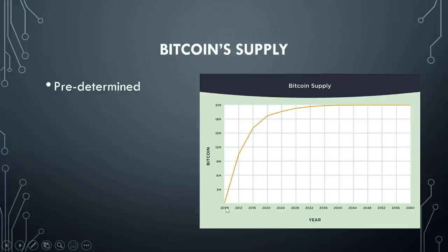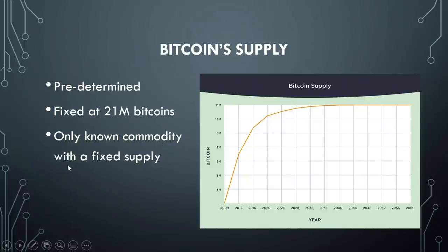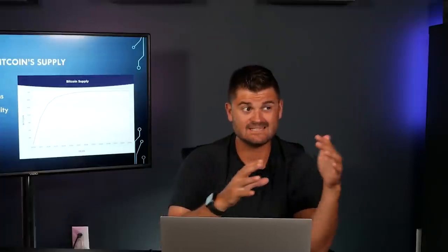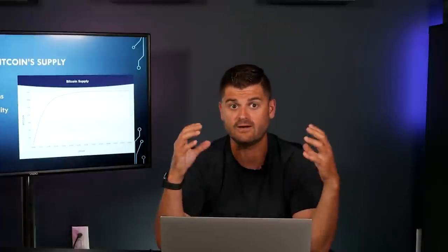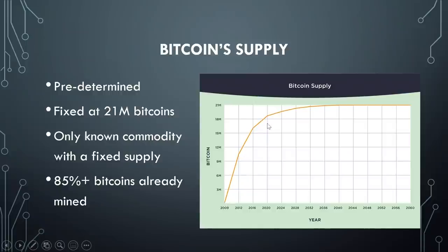To help us choose the best type of valuation model, we need to start by looking at Bitcoin's supply. Bitcoin's supply is predetermined — way back in 2009 when Satoshi Nakamoto created the Bitcoin protocol, it was determined that there would only ever be 21 million Bitcoins created. That was a fixed number. As far as we know, it's the only known widely used commodity that has a finite fixed supply. Gold is scarce, but it is not finite. At the time I'm recording this video, over 85% of all Bitcoins that will ever be created have already been mined. On the supply curve, most of the supply was created in the first 10 years, and throughout the next hundred years or so, there will be a smaller and smaller amount of new Bitcoins created each year.